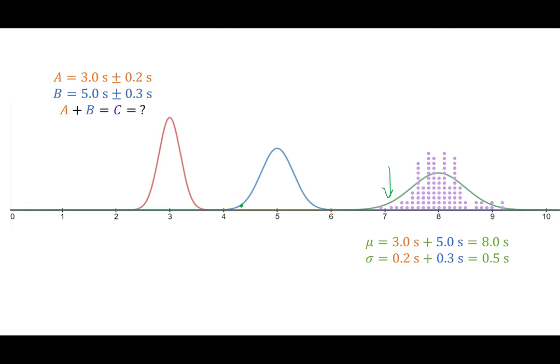So what's kind of happening is the likelihood of the sum to be out here near the extreme requires both of these distributions to be picking the same extreme on the same side. Picking extremes on both of these distributions are both not very likely. So to have two not very likely events happen at the same time, the resulting likelihood is even less than what you might expect.